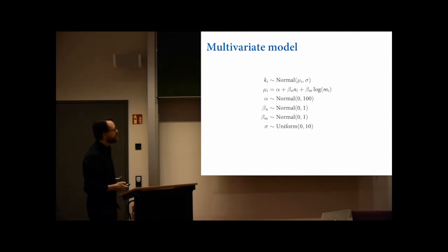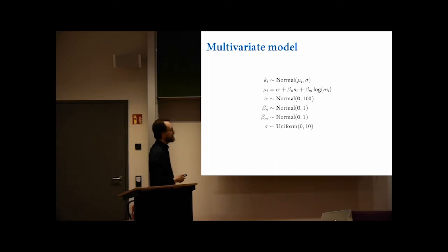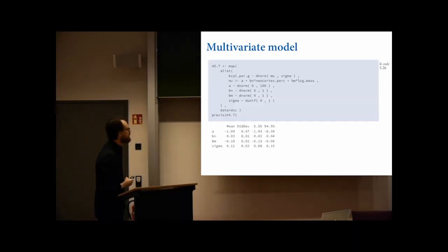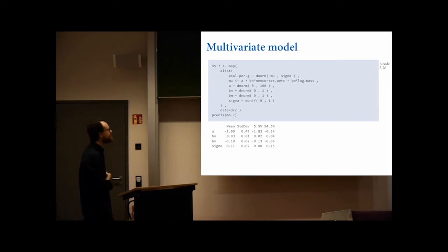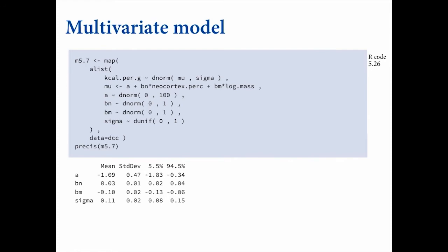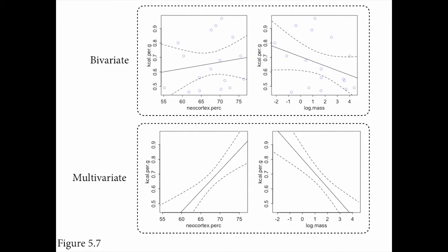The multivariate regression just adds two slopes and two predictor variables to the linear model: one is neocortex percent N_i and the other is log body mass, the log of M_i. We get results — but rather than staring at a table of coefficients, the worst way to understand what the model thinks, we should visualize the predictions. Let's compare them to the bivariate models: the bivariate regressions are shown on the top row, and counterfactual predictions for the multivariate model on the bottom.